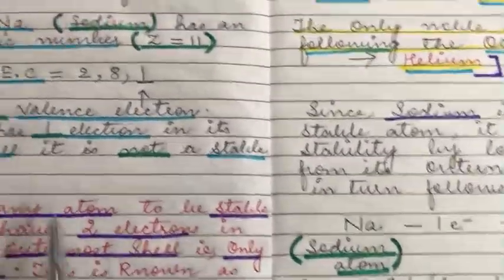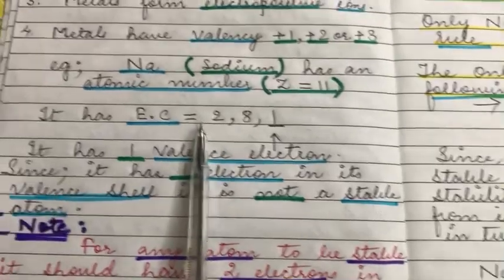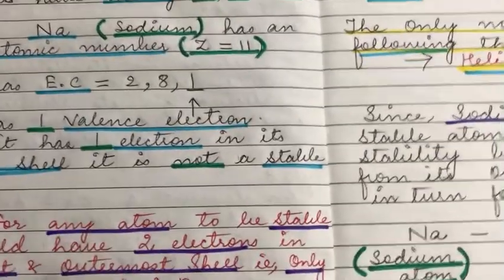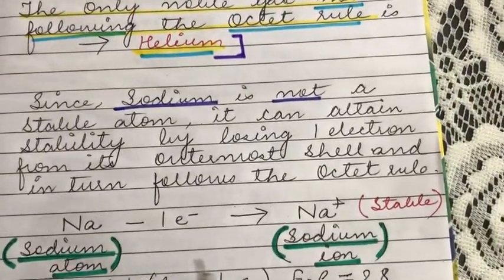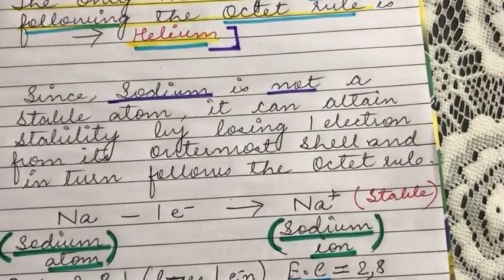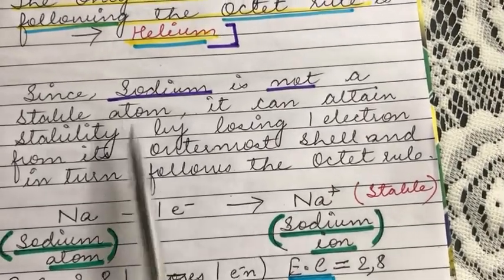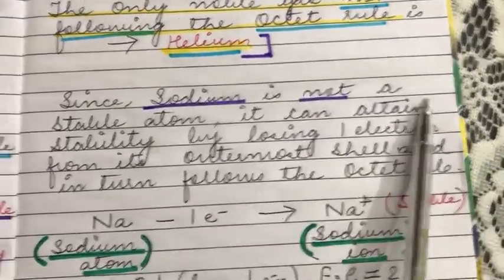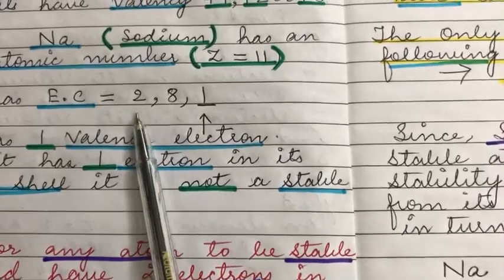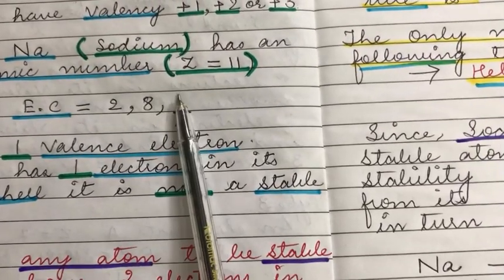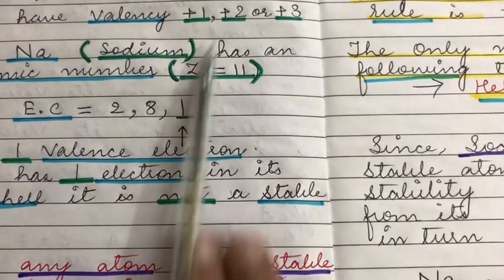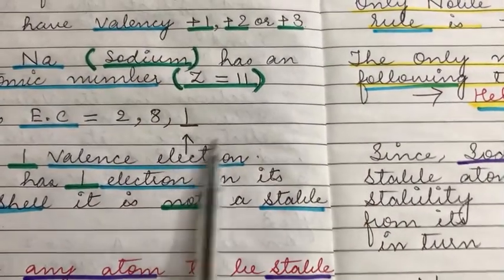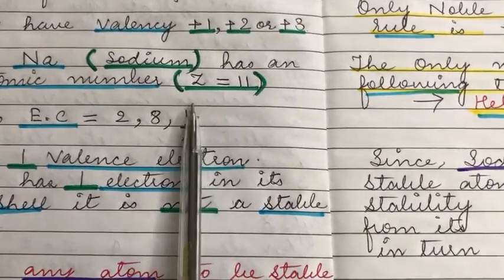Getting back to sodium — we were talking about sodium being a metal. If you have understood the concept of the duplet rule and octet rule, it will be easier to understand why sodium loses electrons and why we call it a metal. Sodium is not a stable atom; it has an electronic configuration of 2, 8, 1 and does not have eight electrons in its outermost shell.